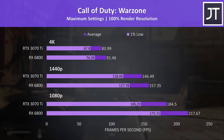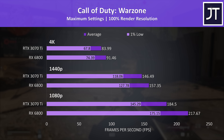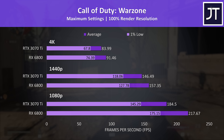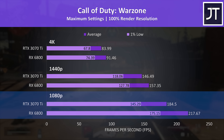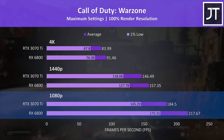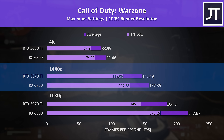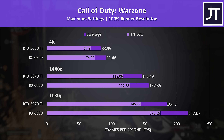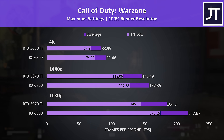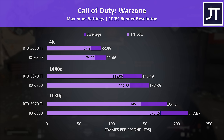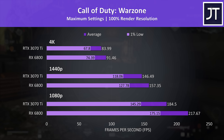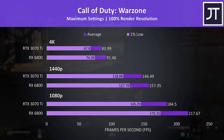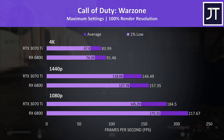Call of Duty Warzone was one of the bigger differences in favor of the 6800, reaching 18% higher average FPS compared to the 3070 Ti at 1080p, 7% higher at 1440p, and 9% ahead at 4K. Granted there may be some inconsistencies in this test compared to other games, as it's a battle royale style game subject to what other players are doing.